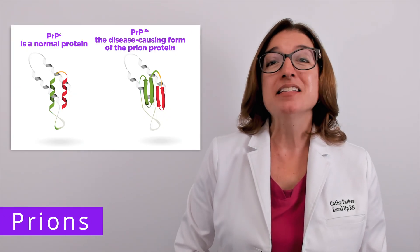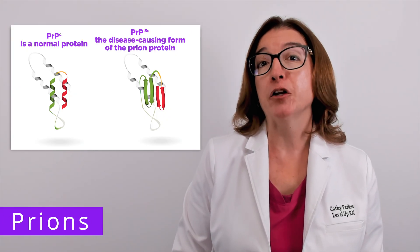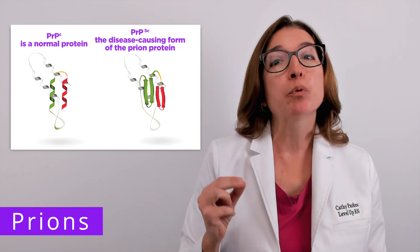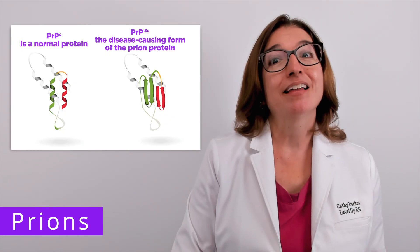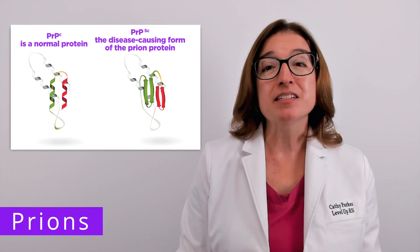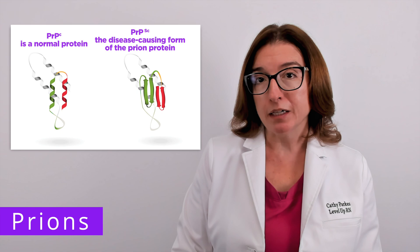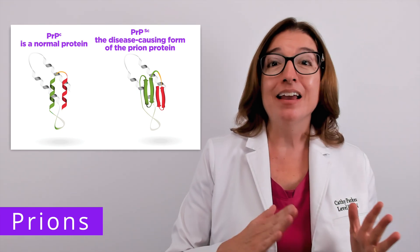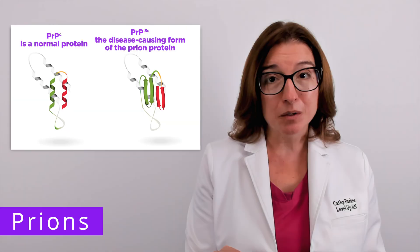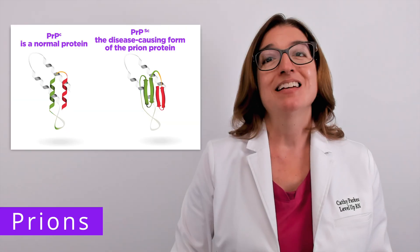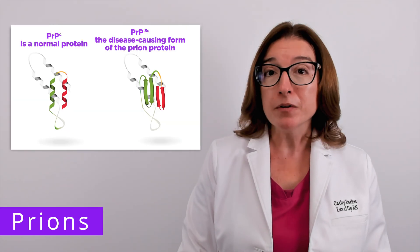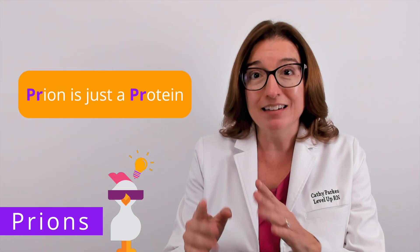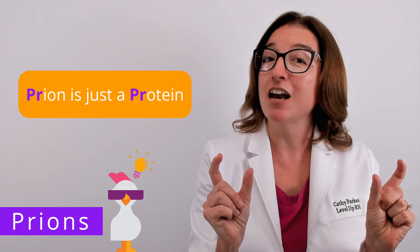A prion is another key type of acellular infectious agent. A prion is a misfolded protein that causes other normal proteins to also fold abnormally. So a prion does not contain DNA or RNA — it is just a protein. Our cool chicken hint to help you remember this is: a prion is just a protein, and both of those words start with PR.